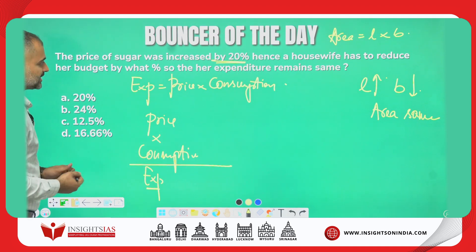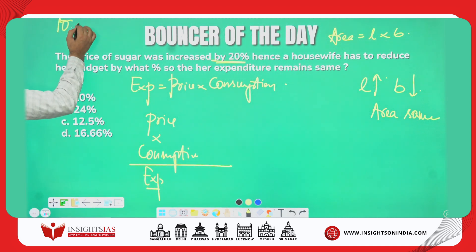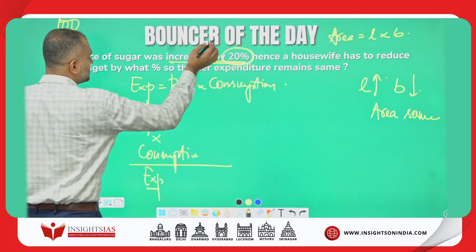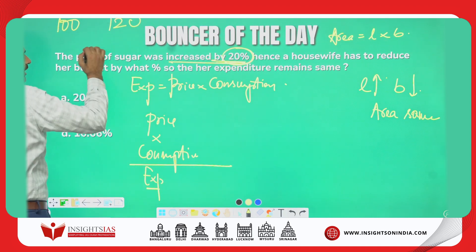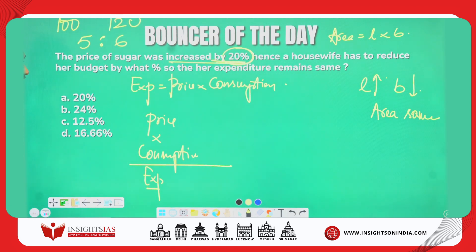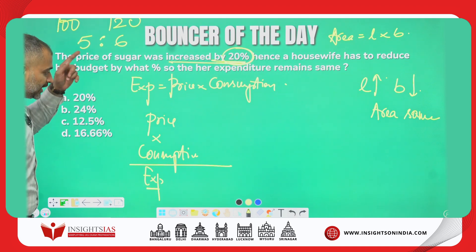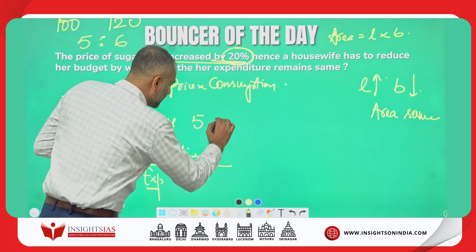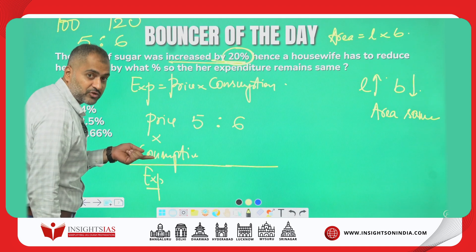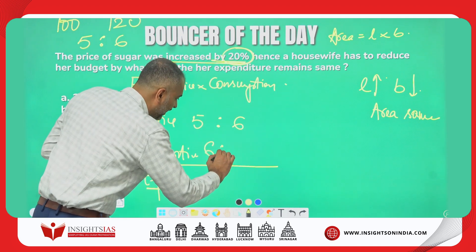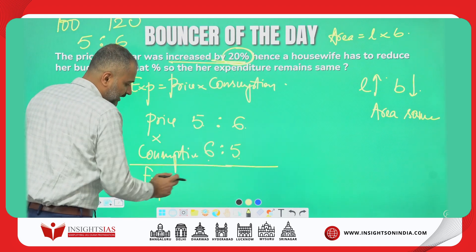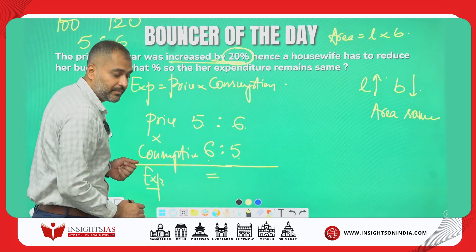For example, the price was 100. Now it is increased by 20%, so it becomes 120. In what ratio are they changing? 5 is to 6 — that is, 20×5 and 20×6. If the price changes from 5 to 6, then the consumption has to change from 6 to 5. Then only 5×6 and 6×5 — the expenditure remains the same.